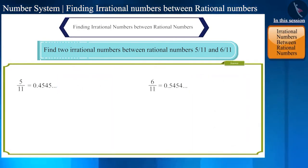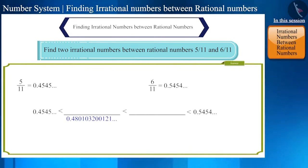Now we have to write two irrational numbers that are greater than .45454545 and smaller than .54545454. Can that decimal number be .480103200121 etc.? Yes. Find the second number yourself.